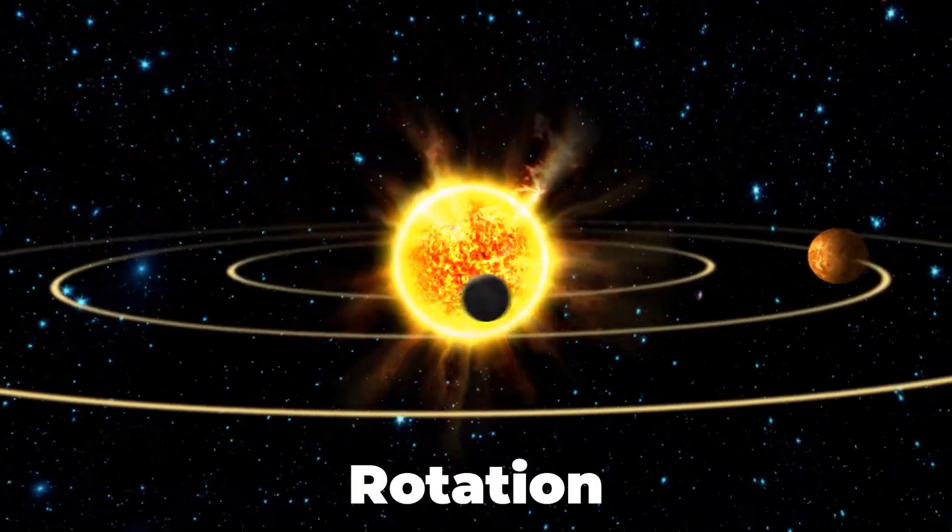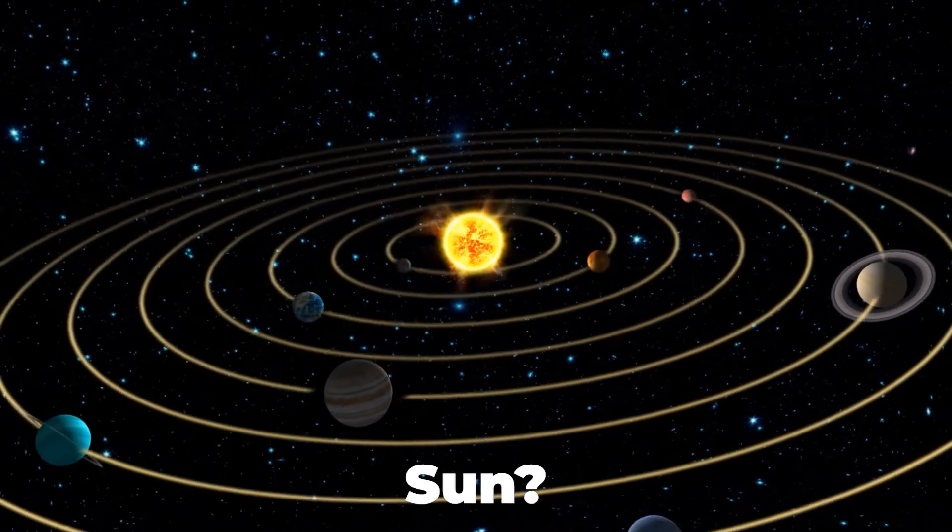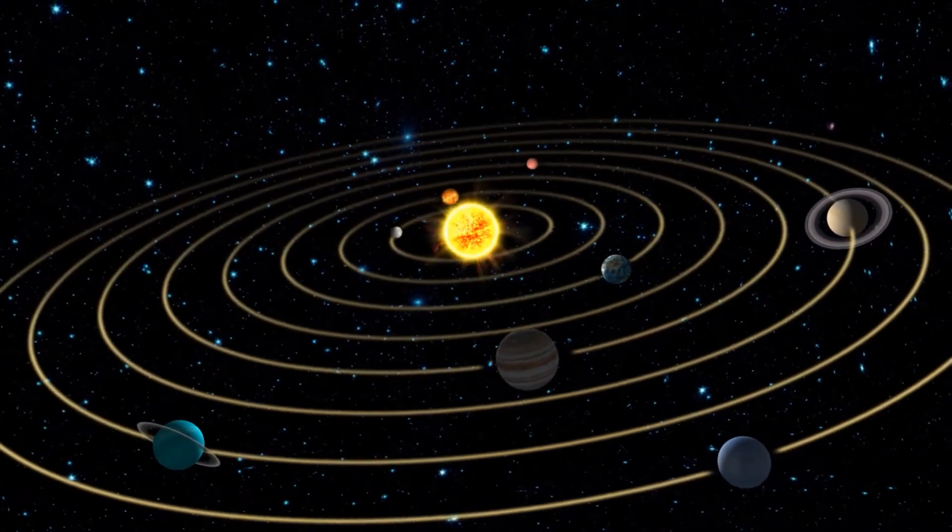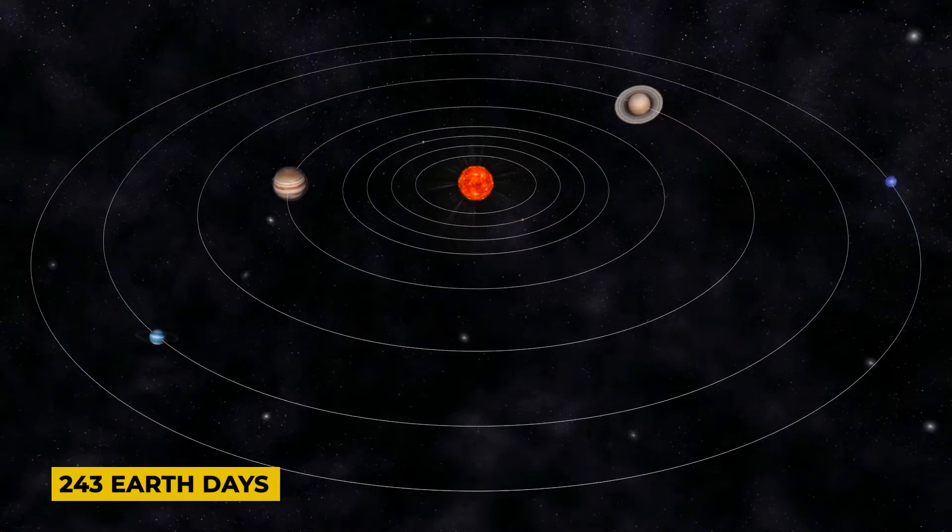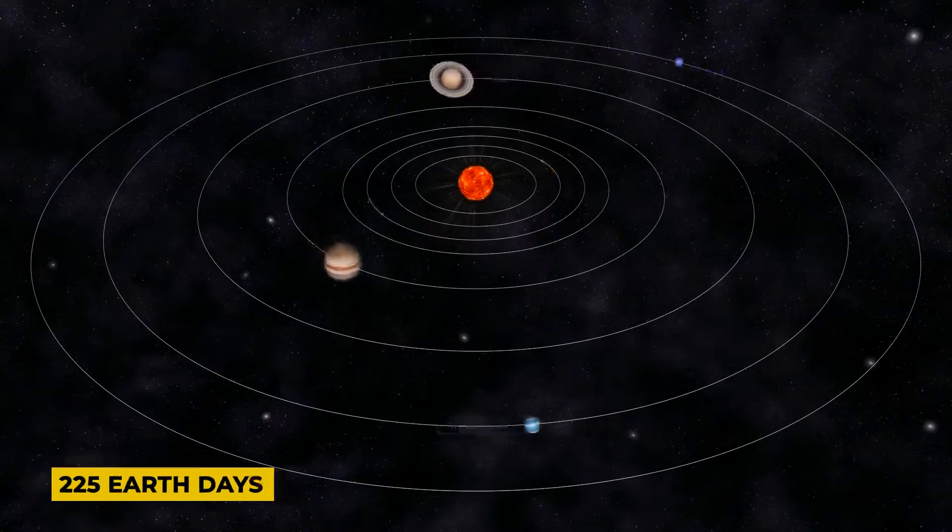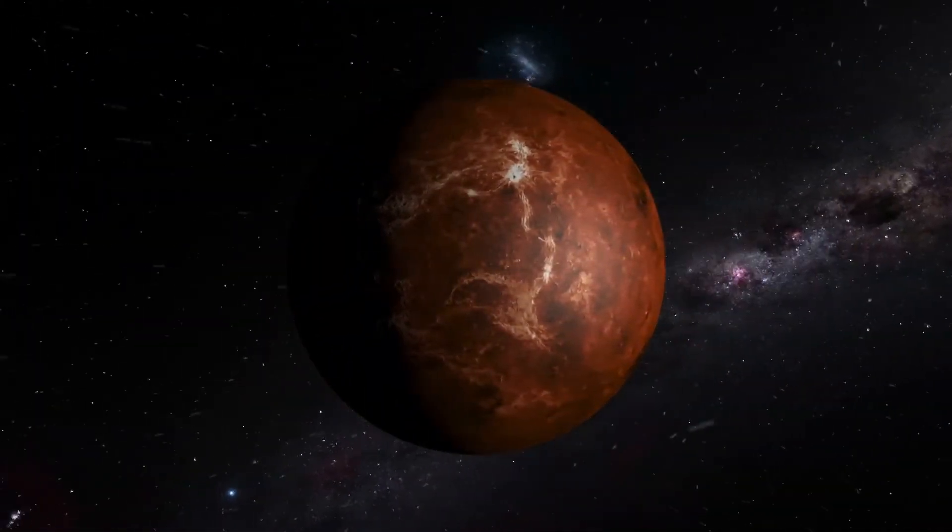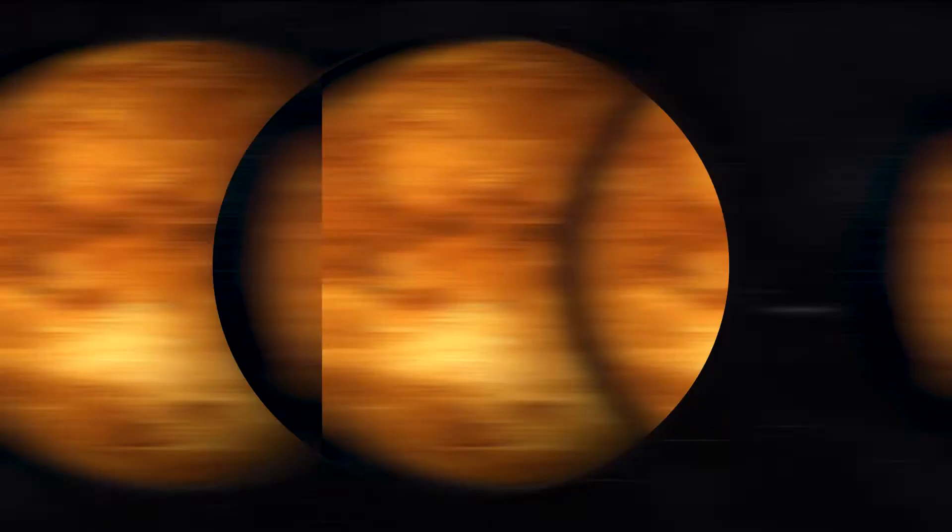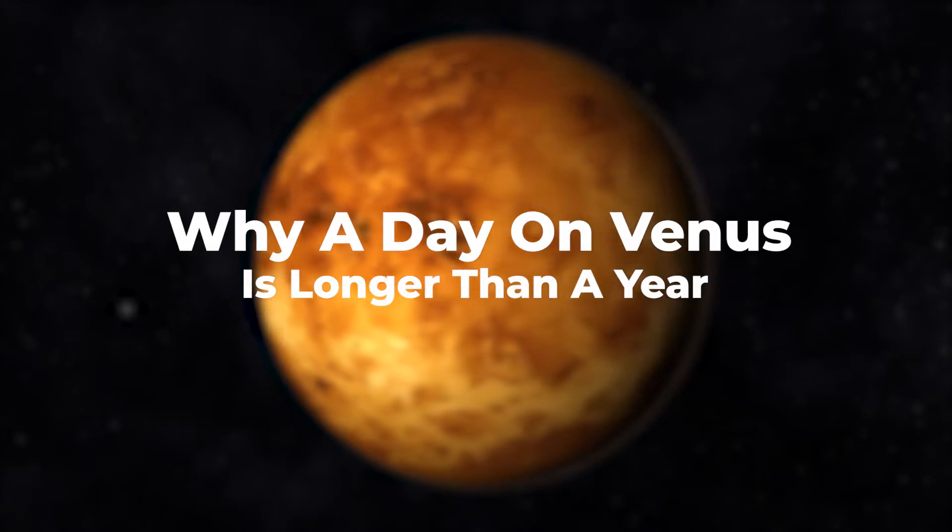Did you know that one rotation of Venus on its axis takes longer than one orbit of the sun? It has the longest rotation of any planet in the solar system, which is 243 Earth days, yet each orbit of the sun takes only 225 Earth days. Isn't that ridiculous? But why? What are the scientists saying about this? Stay tuned as in today's video we reveal why a day on Venus is longer than a year.